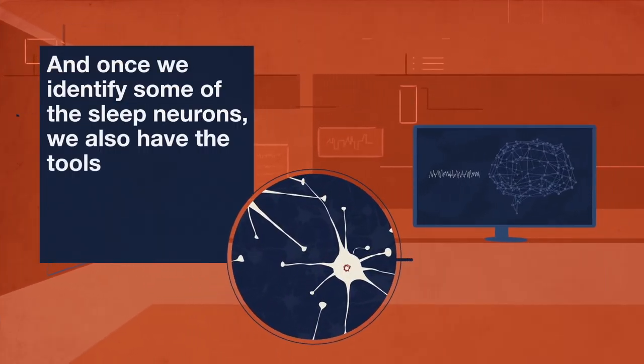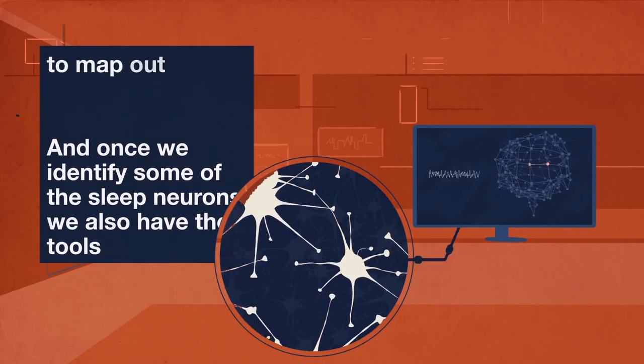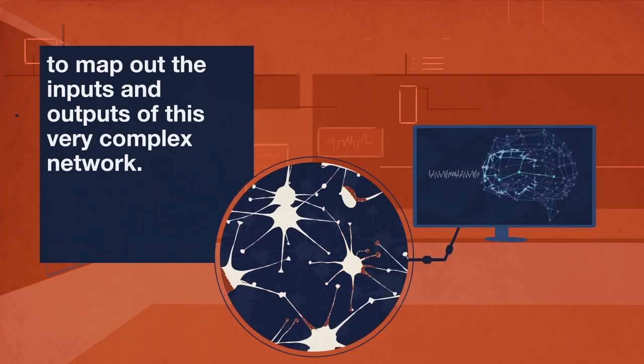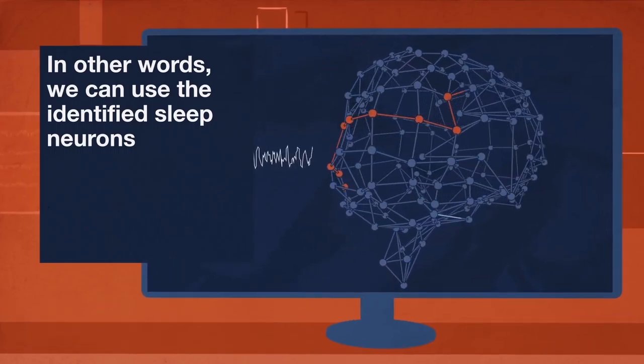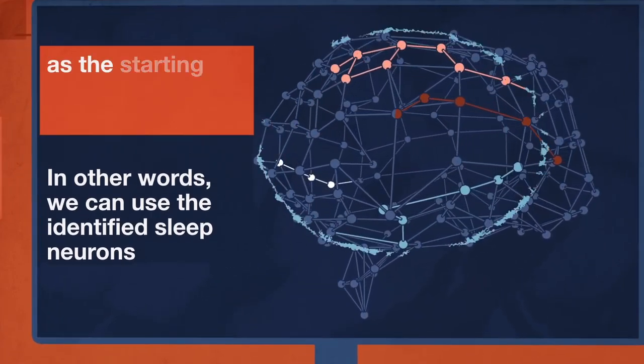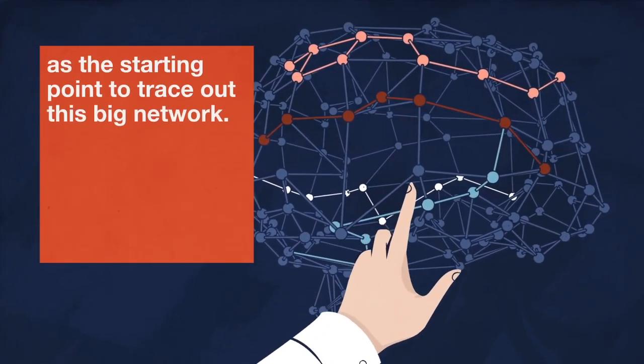And once we identify some of the sleep neurons, we also have the tools to map out their inputs and outputs of this very complex network. In other words, we can use the identified sleep neurons as a starting point to trace out this big network.